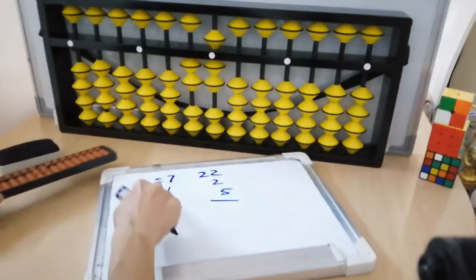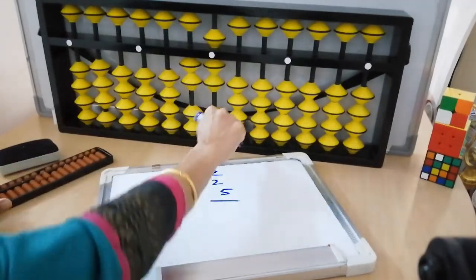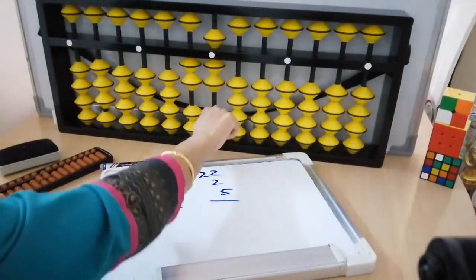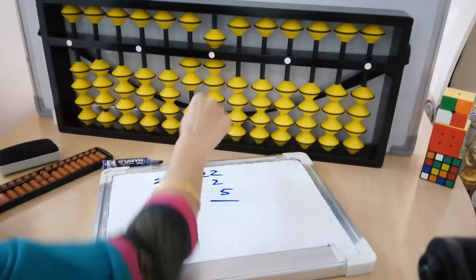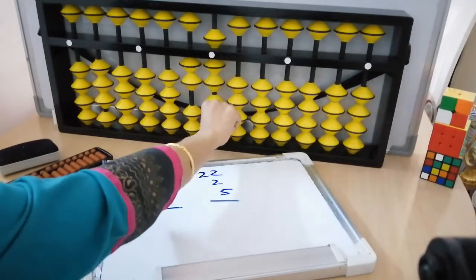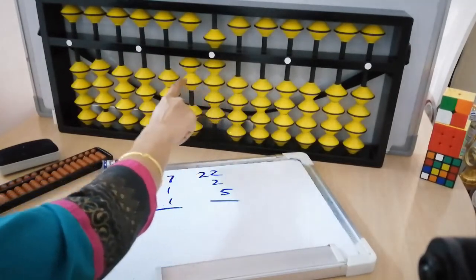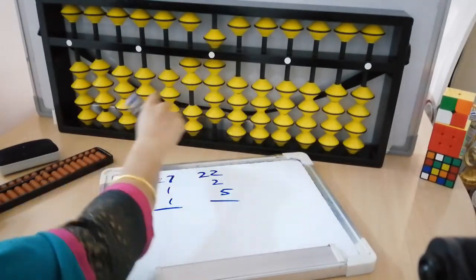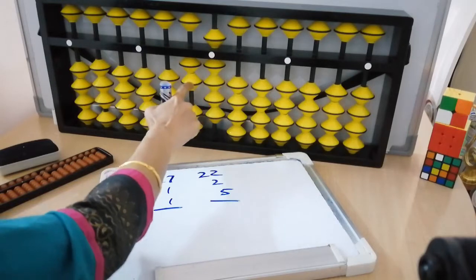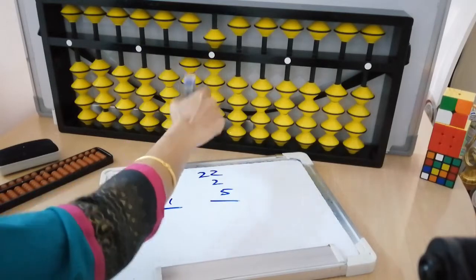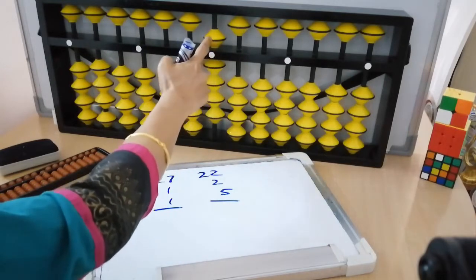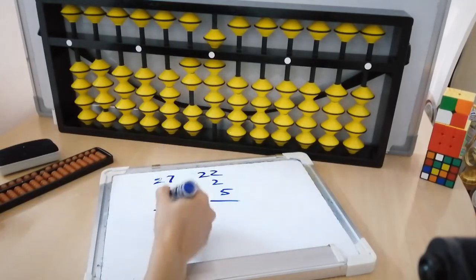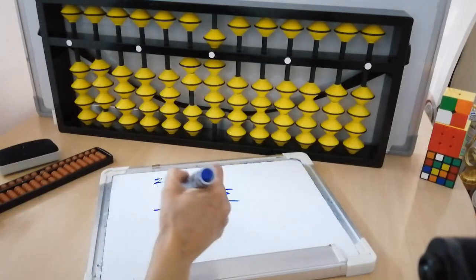Then again add 1, index finger, add 1, again add 1. The answer is 29. Okay, 29. The bead you will place: 5, 6, 7, 8, 9. 29.